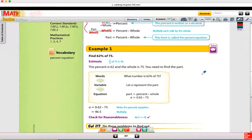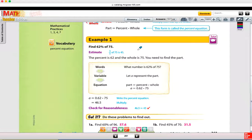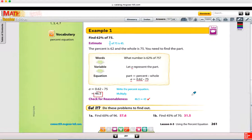For example one, we're finding 62% of 75, and we are just plugging in numbers and variables to represent that as an equation. So A is going to be the part that we're trying to figure out. Part is equal to 62%, which is 0.62 as a decimal, and then taking that times 75. When you multiply, you get 46.5.